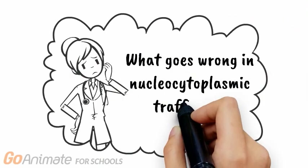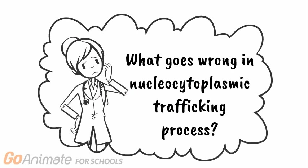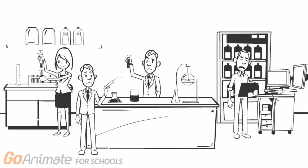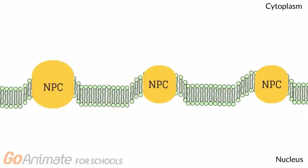But scientists are still unsure as to which step of the trafficking process goes wrong. They have formulated some hypotheses to explain which steps are most likely to become faulty. One hypothesis is that these